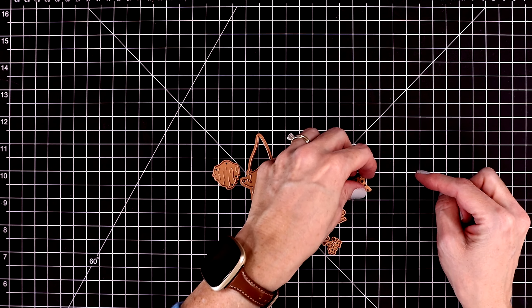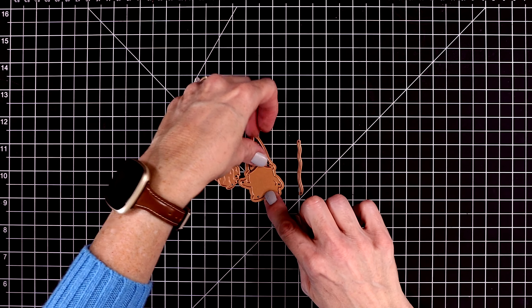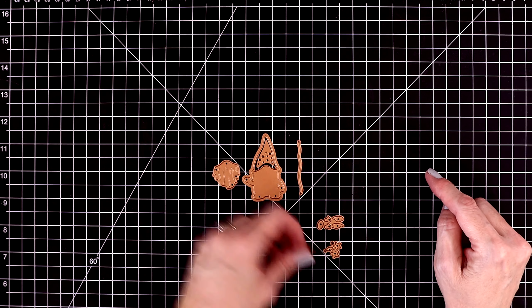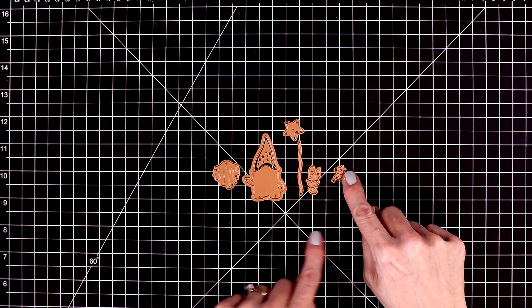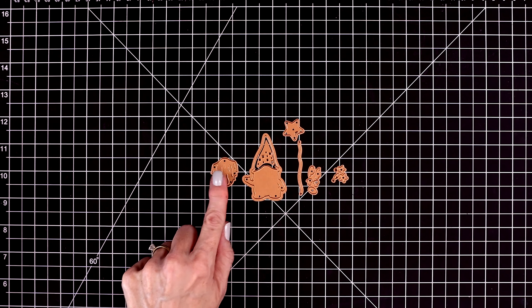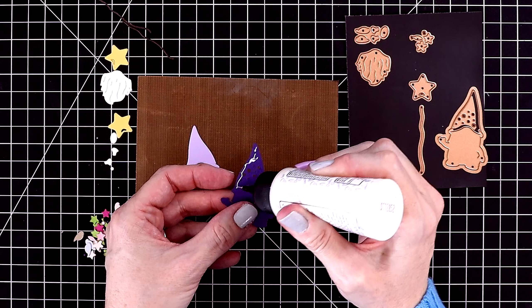Okay, so it looks like a little gnome and he has a staff to hold onto. There's his beard, and this looks like it fits inside of his hat to create some polka dots. There's a star and some flowers and little details for the gnome.